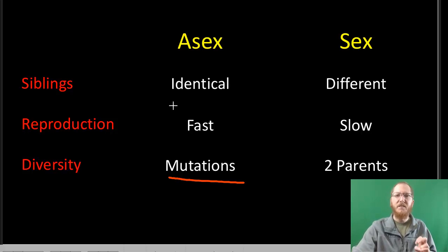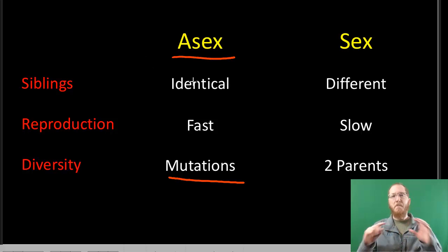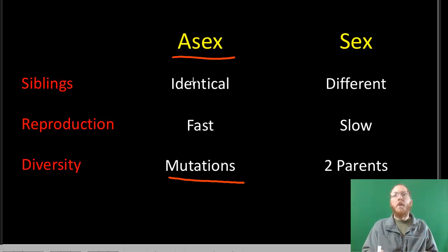If that's the case, asexual is going to be much better than sexual because it gets rid of the whole need to find mates — everybody produces offspring. But for most organisms that are multicellular, bigger stuff like plants and animals, these types of organisms reproduce slowly.